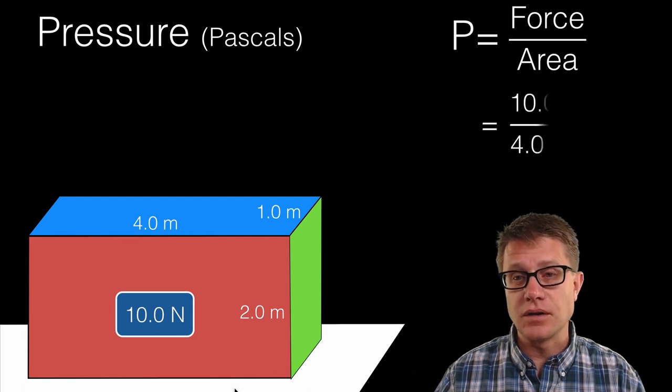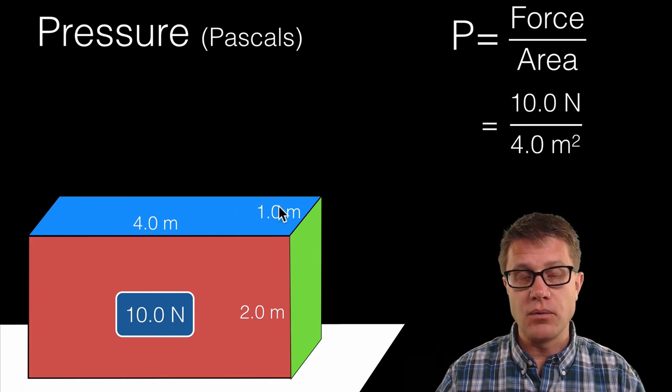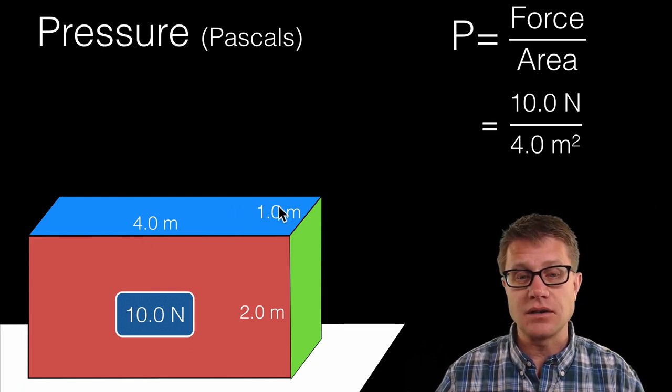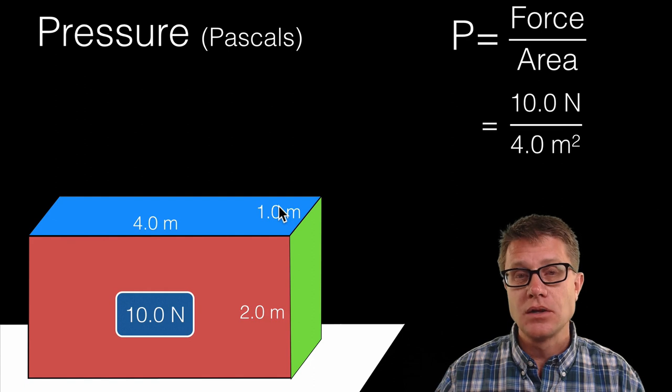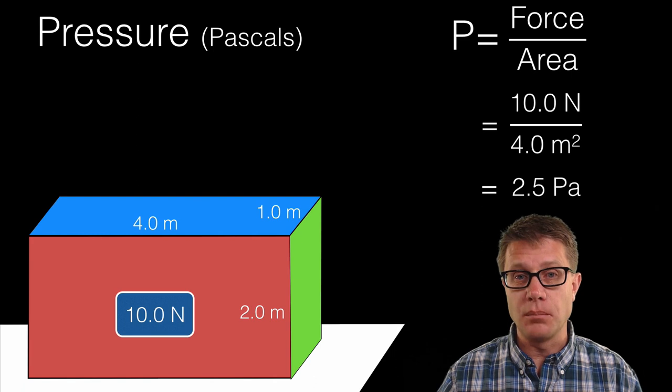And so what is our force? It is going to be 10 newtons. What is the area? Well we calculate the area by taking 4 by 1 length times width and that is going to be 4 meters squared. So what is going to be my pressure? It is going to be 2.5 pascals, which is a really low number.